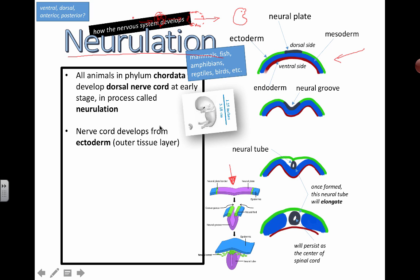So the nerve cord actually develops from the ectoderm, which is the outermost layer right here. So we're going to see this thing called the neural plate, which is eventually going to fold down and form the neural groove right here. And this neural groove is eventually going to fold completely and turn into the neural tube.